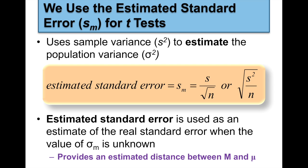Estimated standard error equals sample standard deviation divided by the square root of the sample size. Or, if you only know the variance for your sample, estimated standard error equals the square root of variance divided by the sample size. Estimated standard error is used when the value of the population standard deviation and population mean are unknown. It provides an estimated difference, because we don't have the entire population to work with.